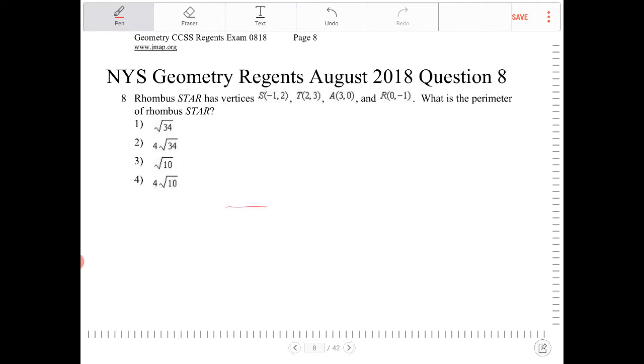I'm going to draw STAR roughly, not super accurately. S is going to be roughly over here at (-1,2). T is located at (2,3), which is going to be roughly over here.